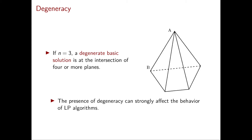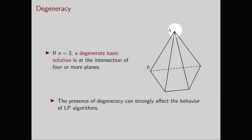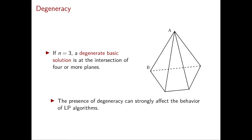In dimension 3, inequalities are planes and the constraint is active at the point if the point is in the corresponding plane. In this example in dimension 3, we have a total number of five inequalities that define this pyramid, and the definition of degenerate basic solution asks for a point to be at the intersection of four or more planes. The only degenerate basic solution is A and it is at the intersection of exactly four planes.